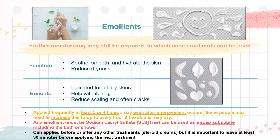Emollients soothe, smooth, and hydrate the skin and are indicated for all dry skins. They can reduce dryness, help with itching, reduce scaling, and heal cracks. They should be applied frequently, at least three or four times a day, even after improvement occurs. Some people may need to increase this up to every hour if the skin is very dry. Any emollient must be sodium lauryl sulfate-free and can be used as a soap substitute, including in the bath or shower. If the product is not free of sodium lauryl sulfate, it strips the skin of its natural oils, which causes dry skin, irritation, and allergic reaction.